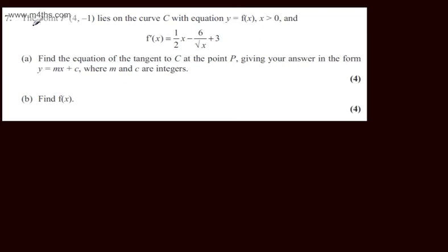This is question number 7. We're told that the point P lies on the curve C with equation y equals f of x where x is greater than 0 and f dashed of x is equal to 1 half x minus 6 over root x plus 3.